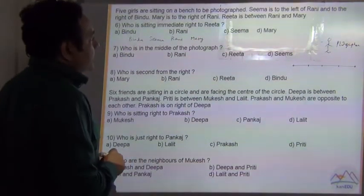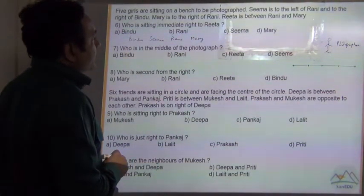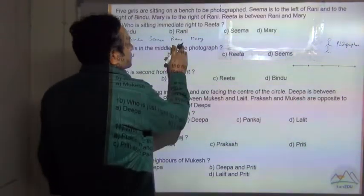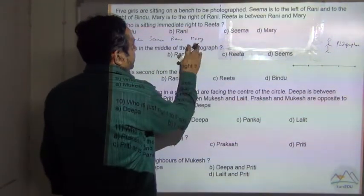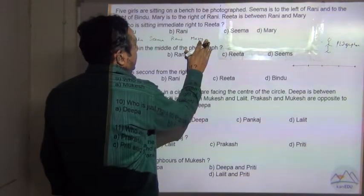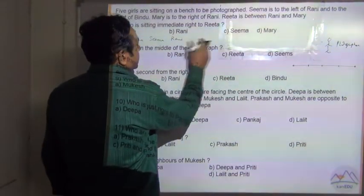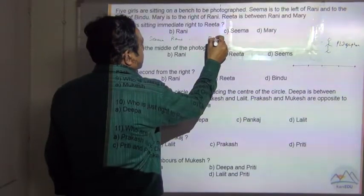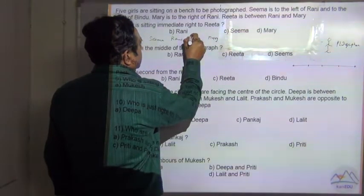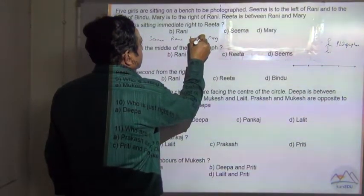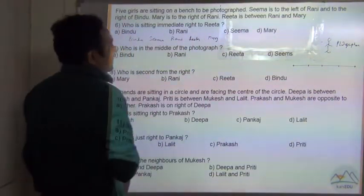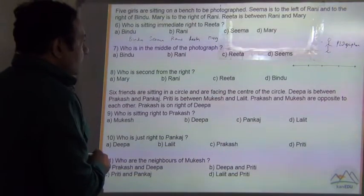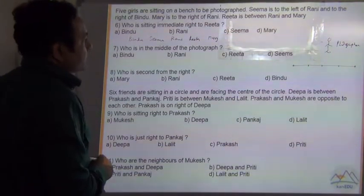Rita is between Rani and Mary. So these are the 5 positions of the girls on the bench.